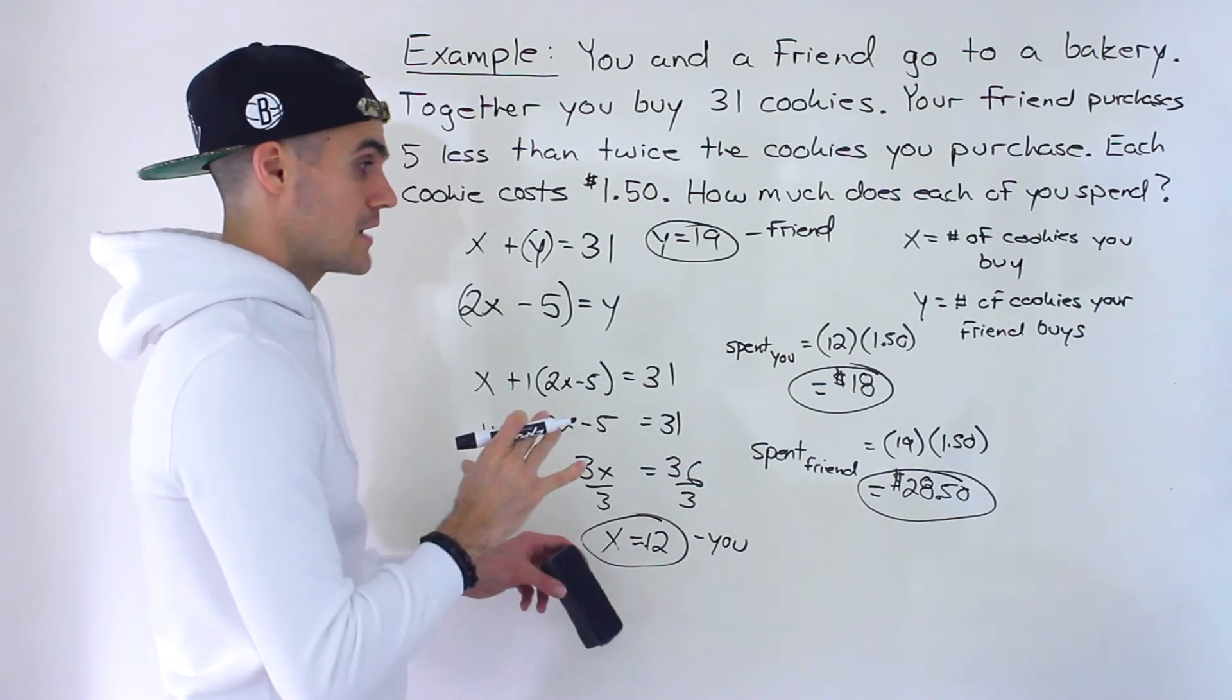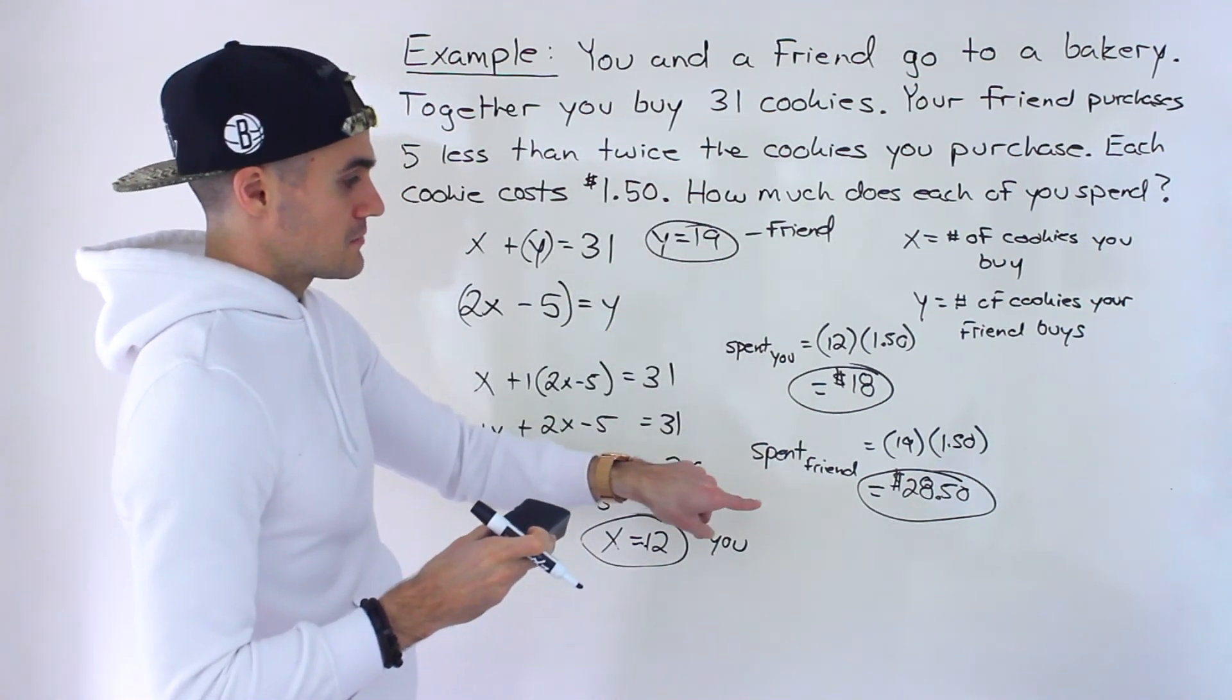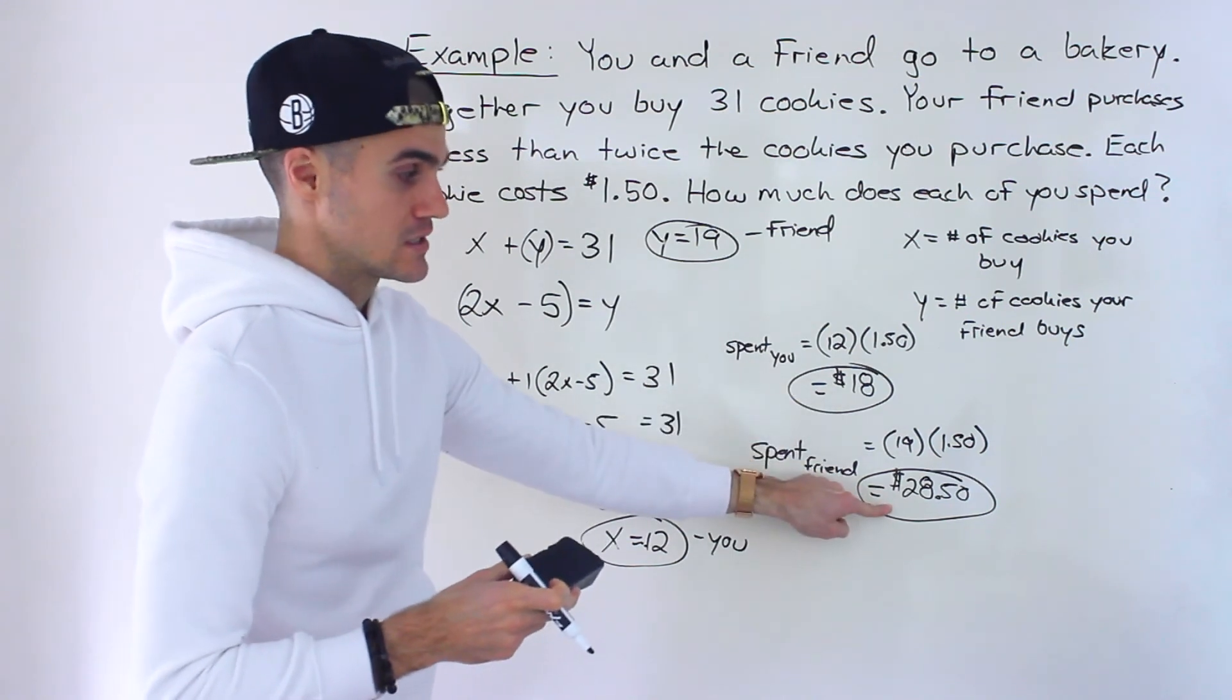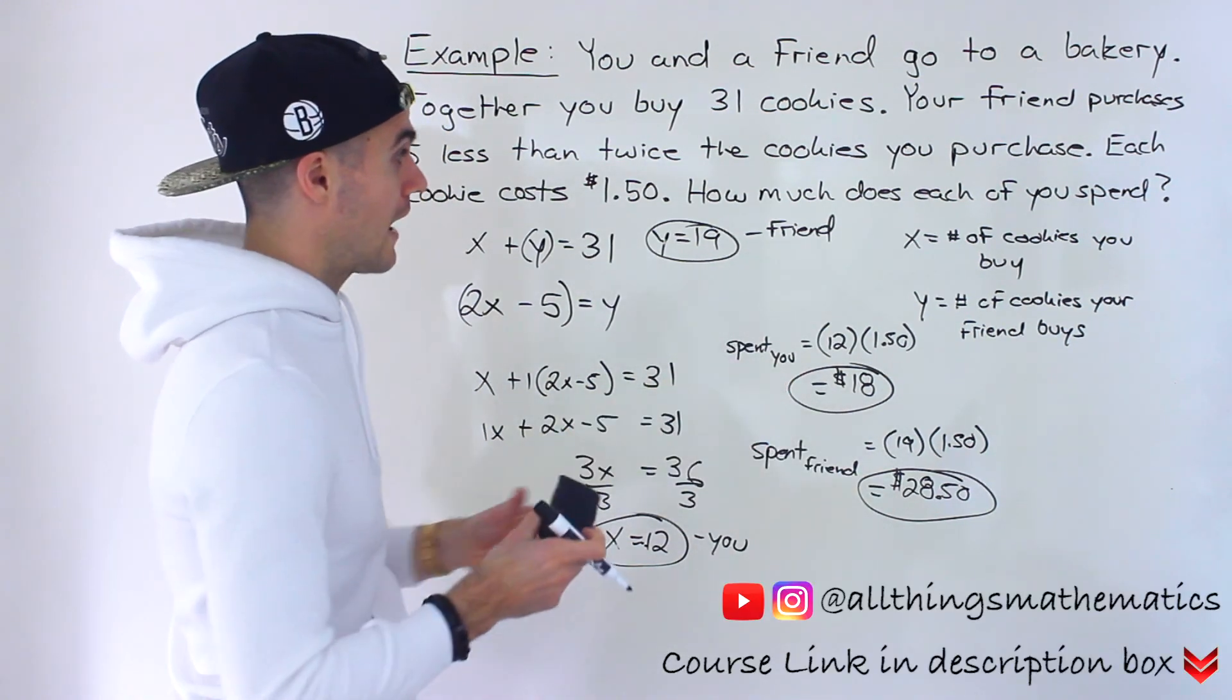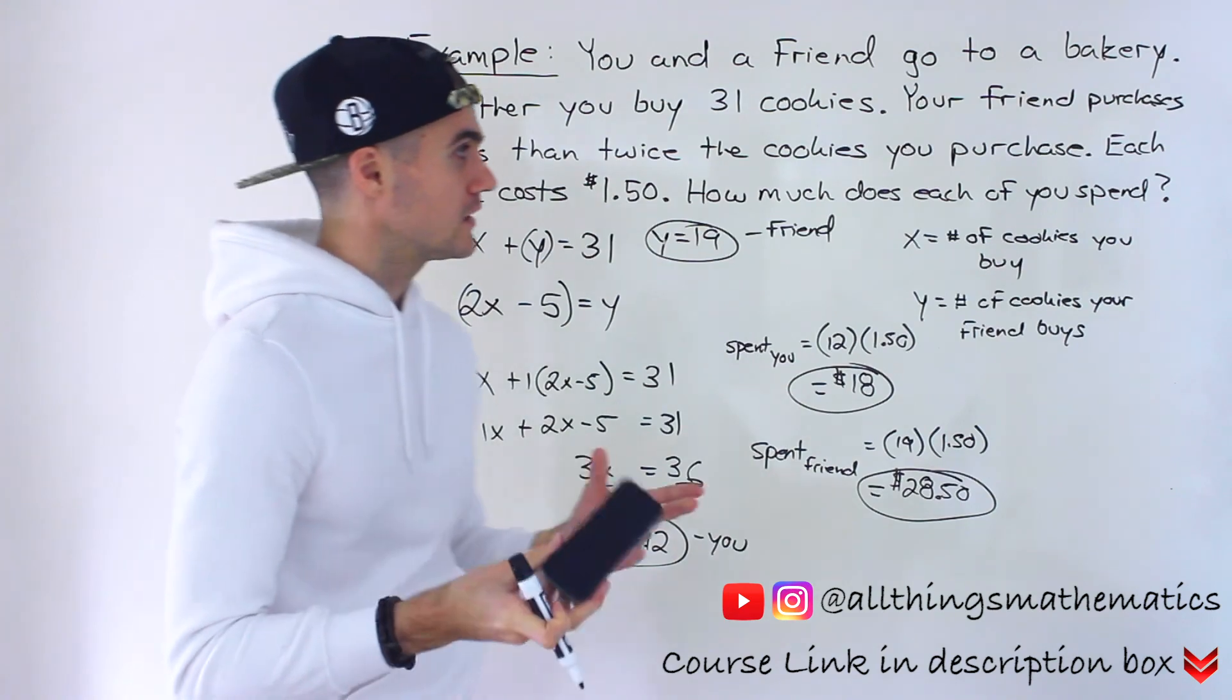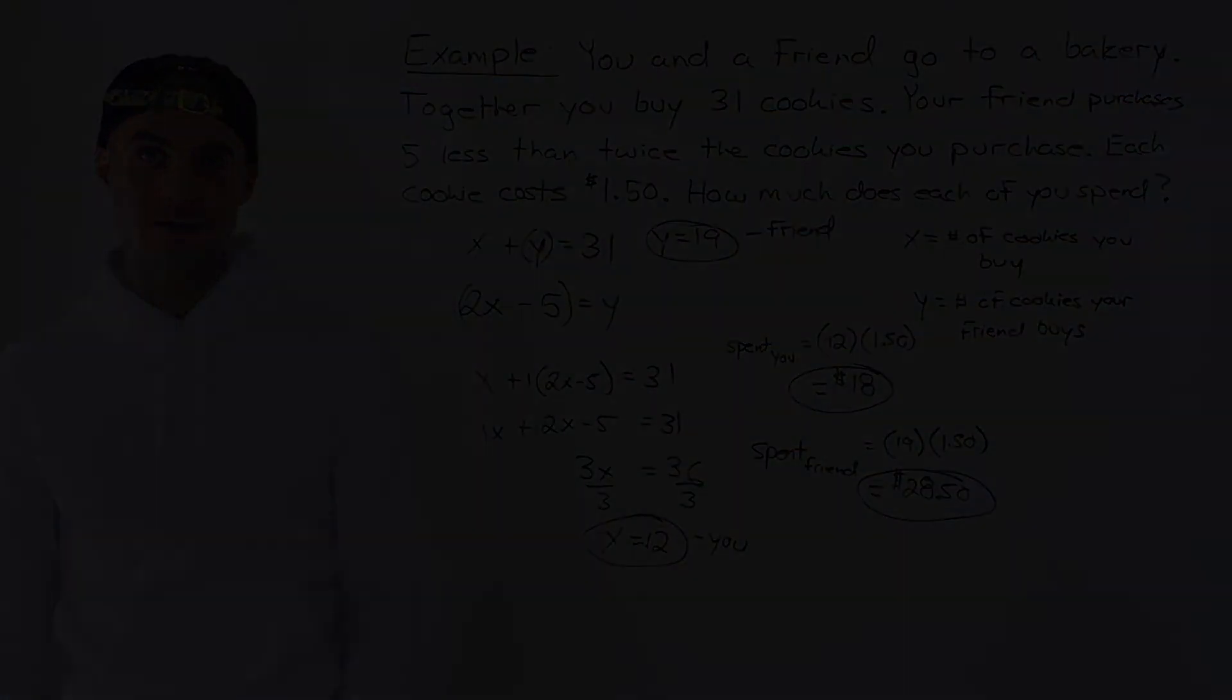And maybe sometimes they'll ask different stuff. Maybe they'll sometimes ask, how much more money does your friend spend than you? Then you would take the difference between these. Right? So it would be $10.50 then. Or how many more cookies does your friend buy than you? Then you would take the difference. It would be seven. So you got to be really careful. You got to read carefully what the question is asking.